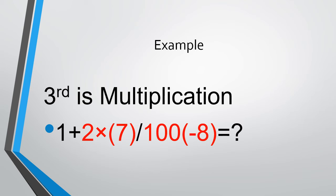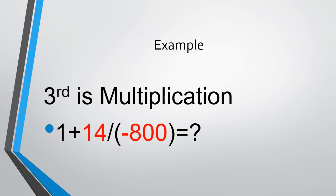Third is multiplication. In this case we have two separate multiplication problems: 2 times 7, and also 100 times minus 8. When you multiply those out, you get 14 and negative 800.